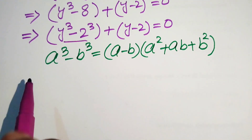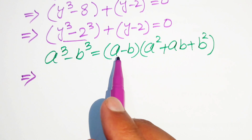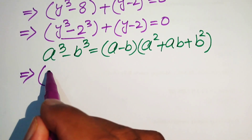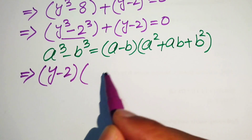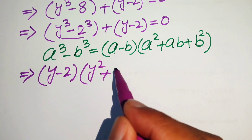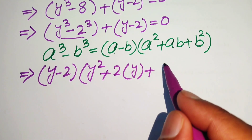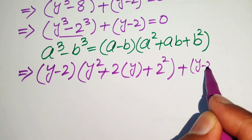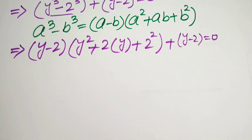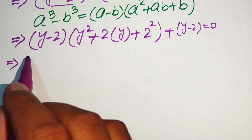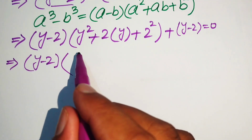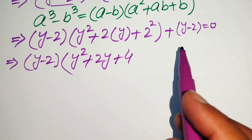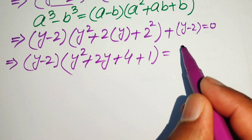Applying the formula with a equals y and b equals 2, the first factor is written as y minus 2, times y squared plus 2y plus 2 squared, plus y minus 2 equals 0. Taking the common factor y minus 2 from both terms gives us y minus 2, times y squared plus 2y plus 4 plus 1, equals 0, which is y minus 2 times y squared plus 2y plus 5 equals 0.